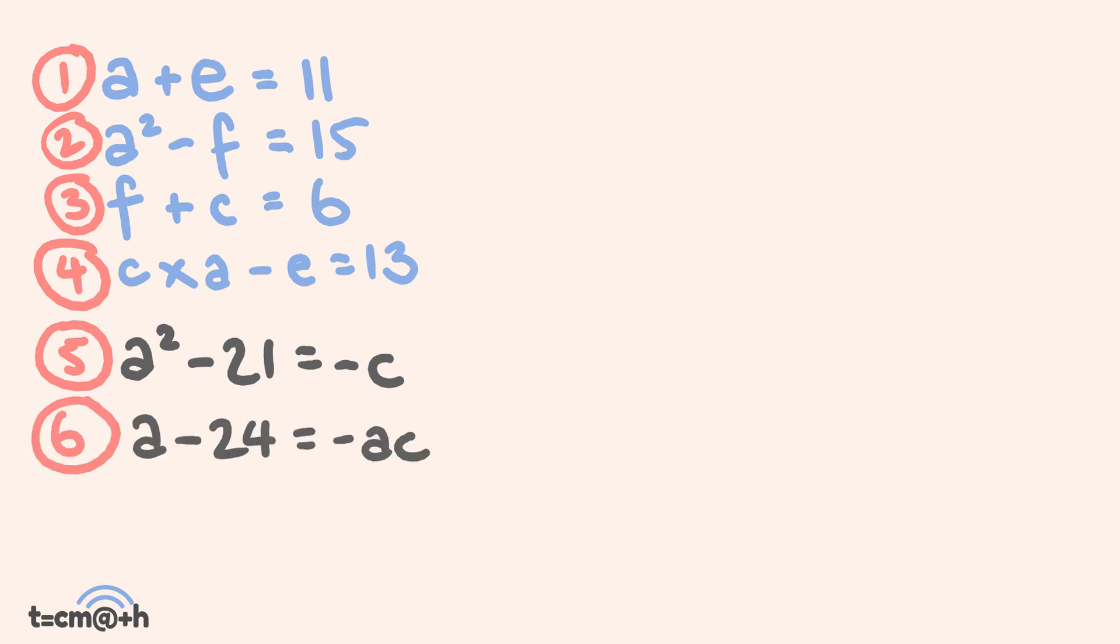The final thing we're going to do to solve this particular problem is we are going to form a seventh equation. This seventh equation is going to be formed by doing the following: we're going to get equation 5 and divide this by equation 6. This will be used to get our final answers. Equation 5 is a² - 21 = -c, and this is going to be divided by a - 24 = -ac. What you're going to see is that straight away we can cancel out our negative c and negative c, which leaves 1 over a.